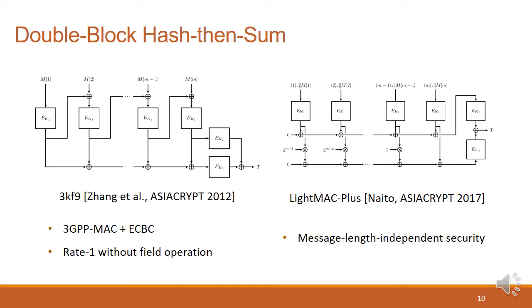Later, there were studies to make efficient BBB-secure MACs. Zhang et al. proposed 3KF9, which is the combination of 3GPP MAC and ECBC. 3KF9 is the only rate-one algorithm which provides BBB security without using any field operation. Finally, Naito proposed LightMAC+, which is a variant of LightMAC. LightMAC+ is not a rate-one algorithm since it uses counter-embedding on message, but it achieved message-length independent security.